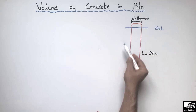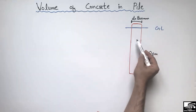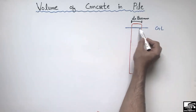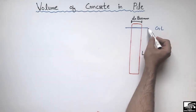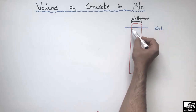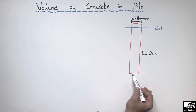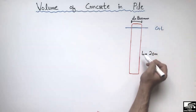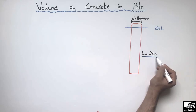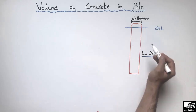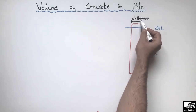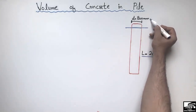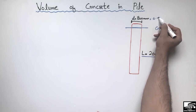Let's consider this is a single pile. This is the ground level of the earth and there is a pile which is underneath the ground — pile foundations are always constructed underneath. The pile is driven into the soil and the total length of the pile given is 20 meters, and the diameter of the pile is 800 millimeters or 0.8 meters.